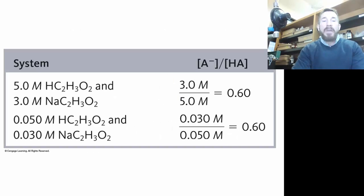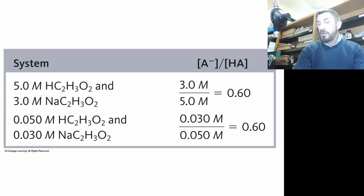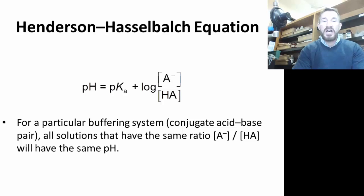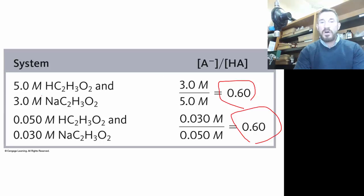Let's say you have a buffer system with the acid as 5 molar and the base as 3 molar - a 3 to 5 ratio, that's 0.6. Let's say you dilute it to 0.05 and 0.03. It's still 0.6. This illustrates when you dilute it, it doesn't change the pH of the solution. What determines the pH is the pKa of that substance.